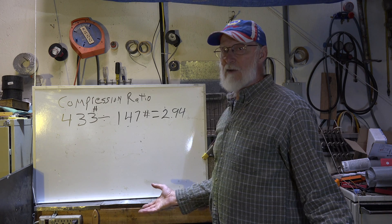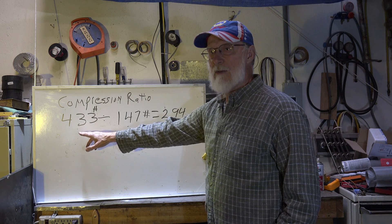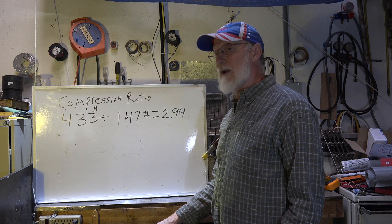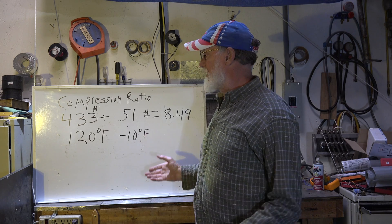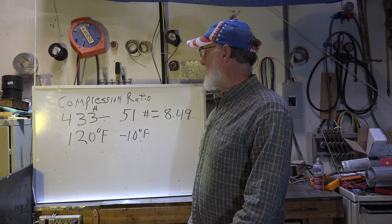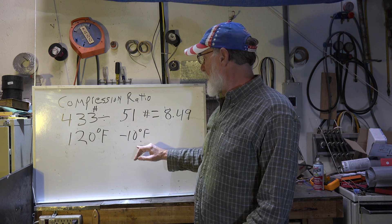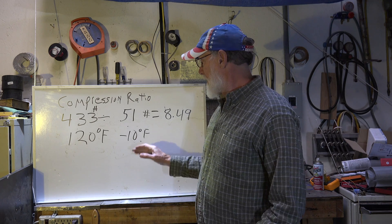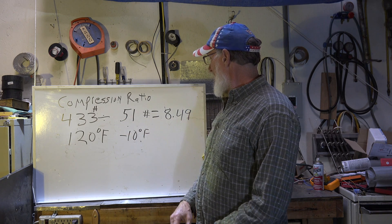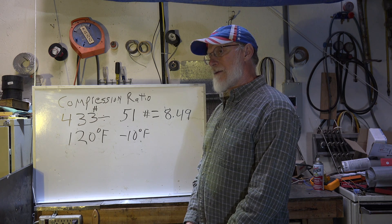Essentially 3 — a compression ratio of about 3. Now let's change the suction pressure and see what happens. I'm not going to change the condensing side because that corresponds to outside temperature. I still have 433 on the discharge side, but now I've put the suction pressure down to 51, which corresponds to minus 10 degrees — that's going to give me a box temperature of maybe around zero. When you calculate it out, it's 8.49, essentially a compression ratio of 8.5.